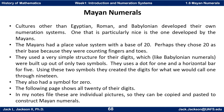The Mayans had a place value system with a base of 20. Perhaps they chose 20 as their base because they were counting fingers and toes — a warm culture with a lot of sandals. They used a very simple structure for their digits which, like Babylonian numbers, were built out of only two symbols.